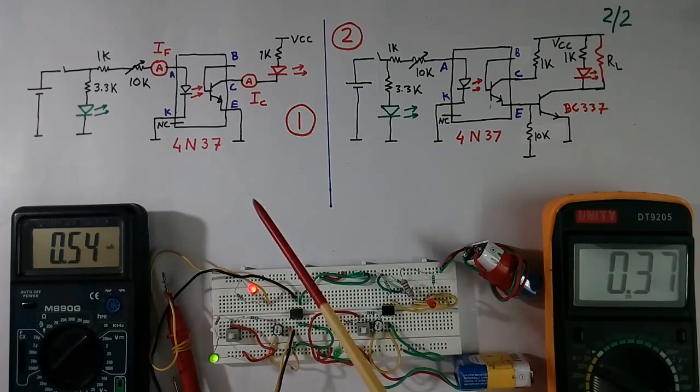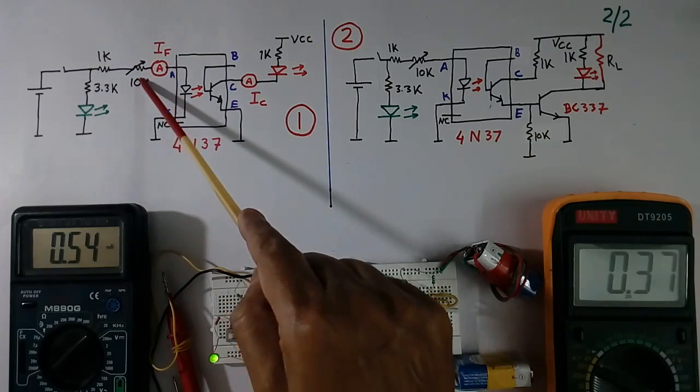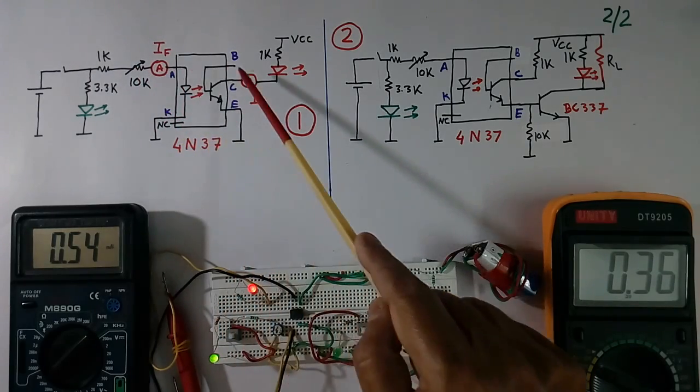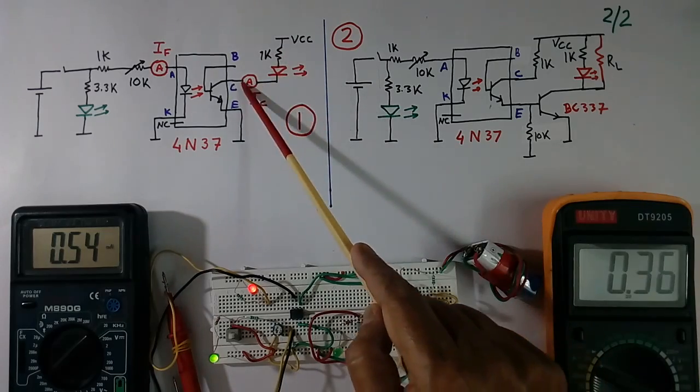Now I will increase the power. I will reduce this resistor value again. This current will increase, this current will increase, this light will increase.